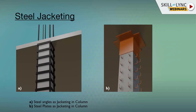Steel jacketing can use plates or angle sections. As per Euler's formula, most column failures occur at L/3 from the top, at the beam-column intersection. Steel plates are used to restore that particular section. If the entire column shows cracks, steel plates or steel angles can be applied along the full length.